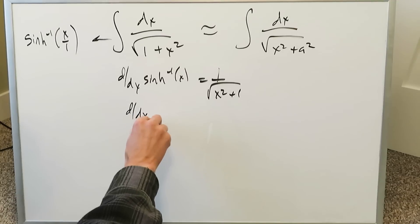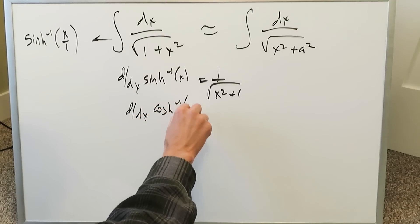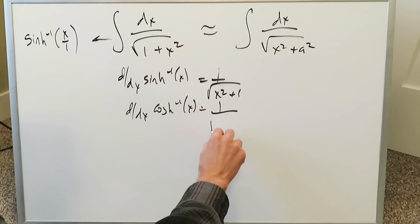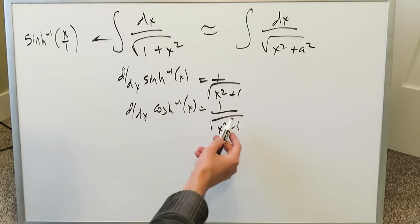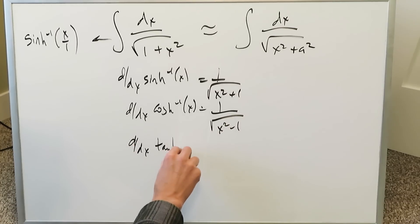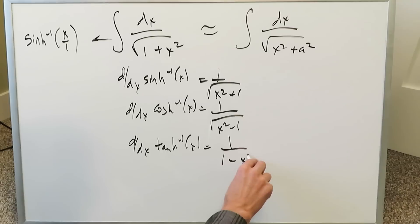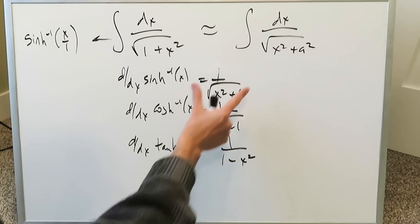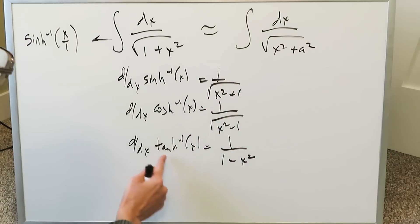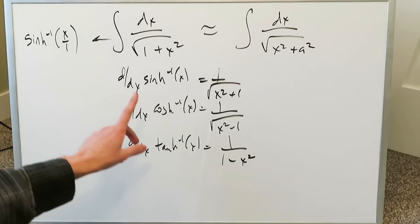You can also remember these other important ones. Hyperbolic cosine, and then here you'd have x squared minus 1 within the root. And then the inverse hyperbolic tan, you would have here 1 over 1 minus x squared. If you have integral forms which look very much like this, think about inverse hyperbolics and just go the easy route.